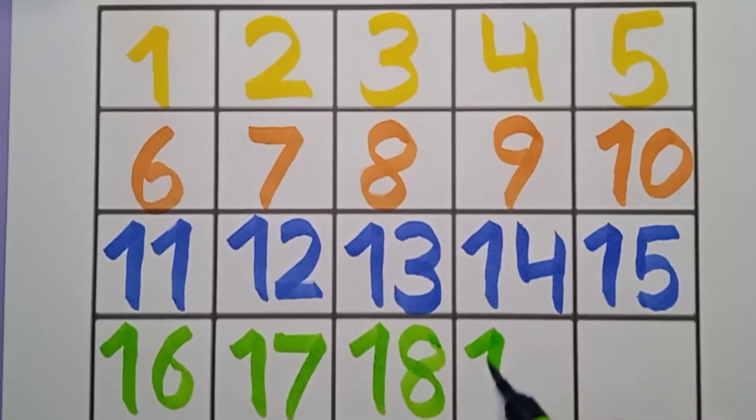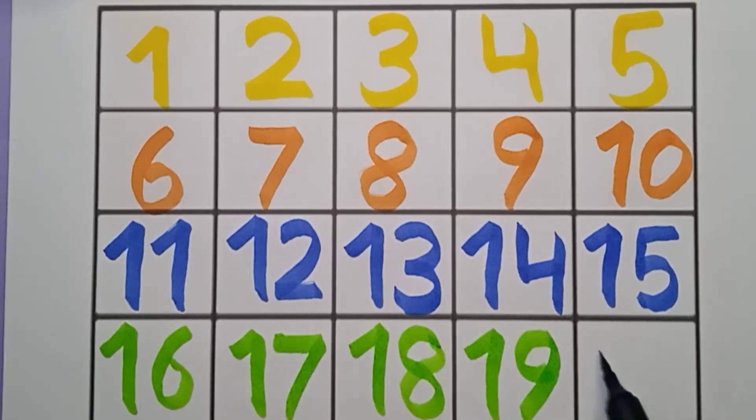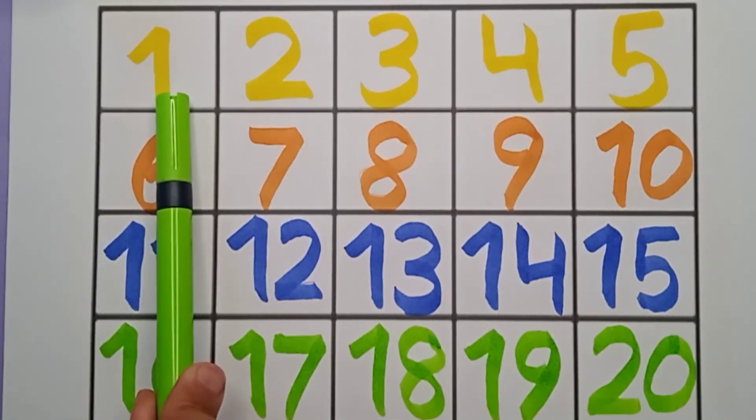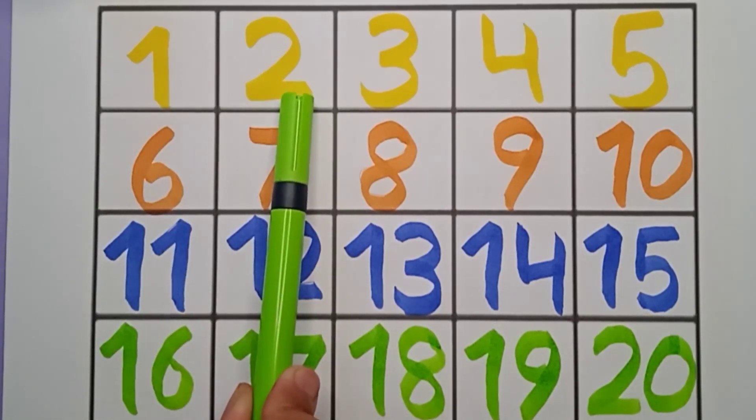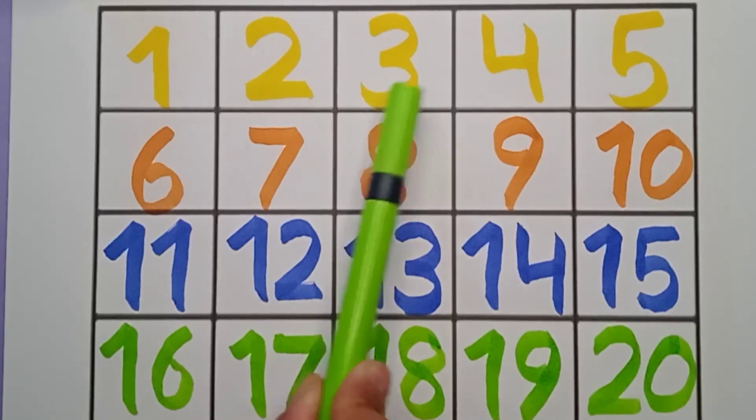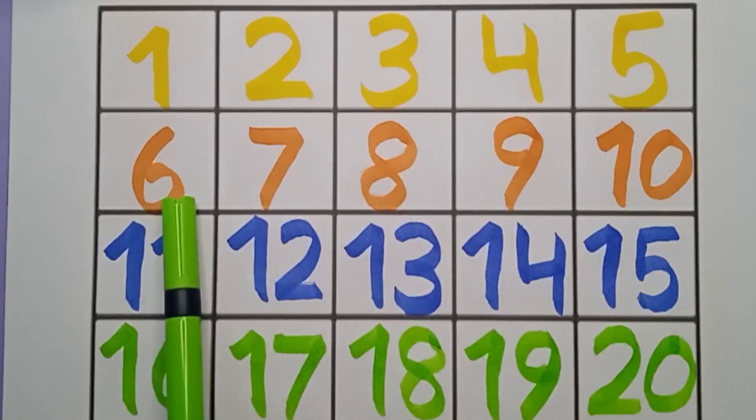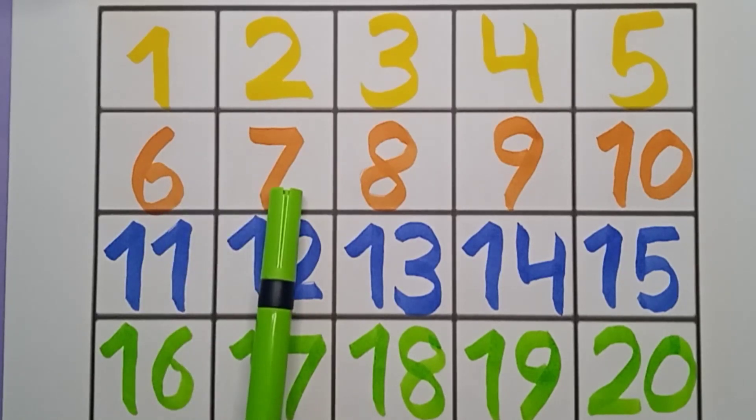Next is nineteen, nineteen, nineteen. Last one is twenty, twenty, twenty. Let's revise: one, two, three, four, five, six, seven, eight, nine, ten.